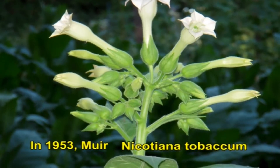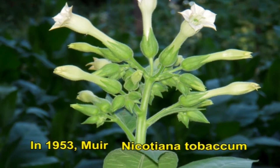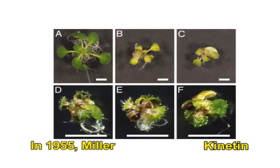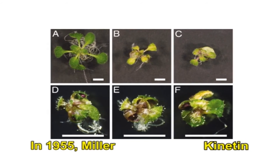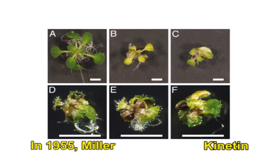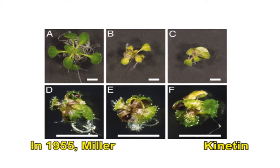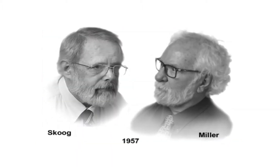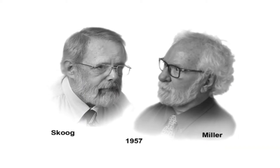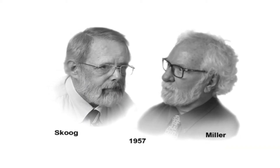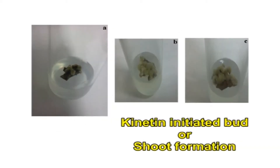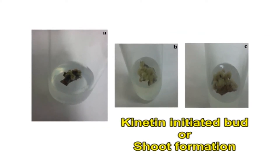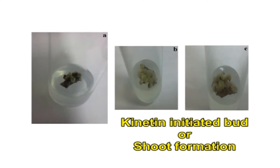In 1953, Mu demonstrated single cell culture in Nicotiana tabacum. In the year 1955, Miller separated the first known cytokinin from the DNA of herring sperm and named it kinetin. In 1957, Skoog and Miller proposed the concept of hormonal control of organ formation: high concentration of auxin promoted rooting, and a proportionate quantity of kinetin initiated bud or shoot formation.